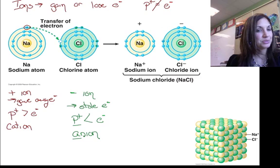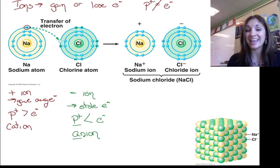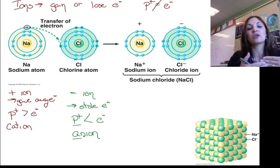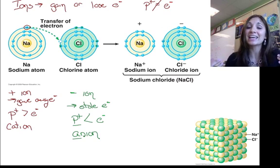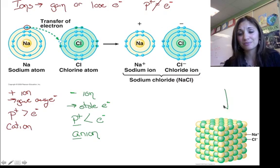Now, opposites always attract. So now I have this positive sodium cation and this negative chlorine anion. It's a match made in heaven. They're going to attract each other because one has a plus one charge, one has a negative one charge. Opposites attract, and a beautiful thing is born. We have sodium chloride, salt.